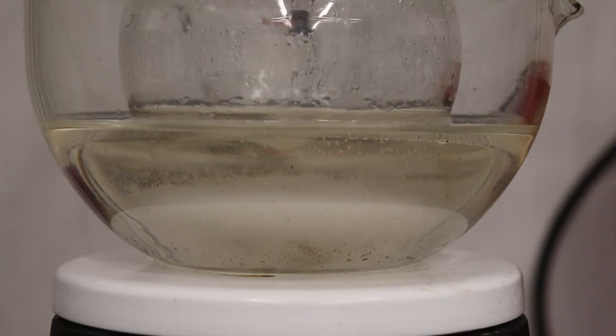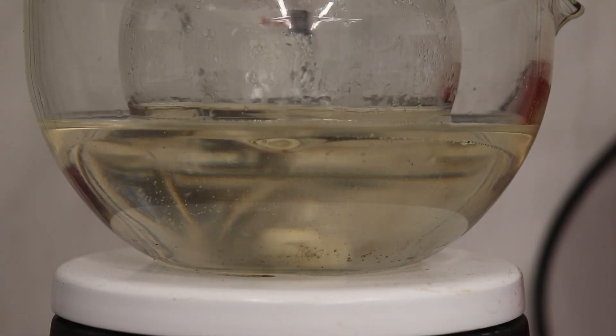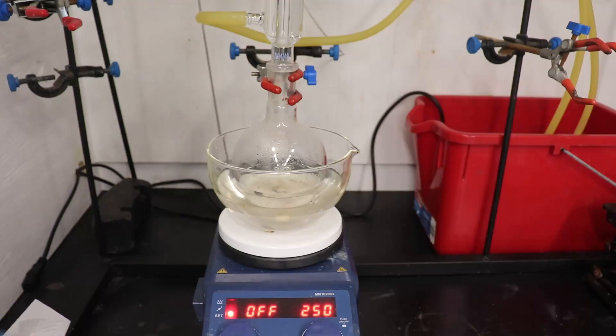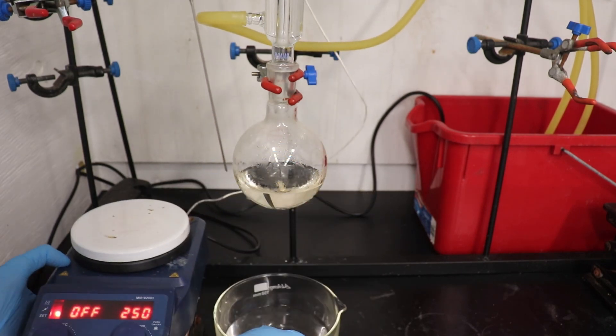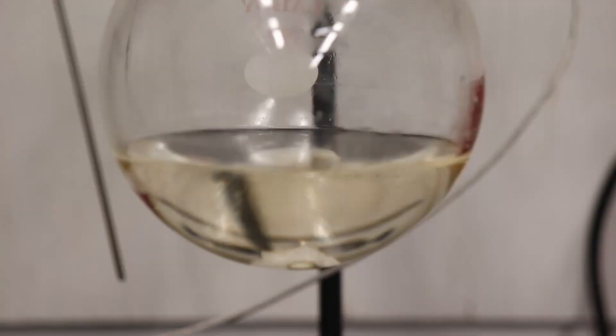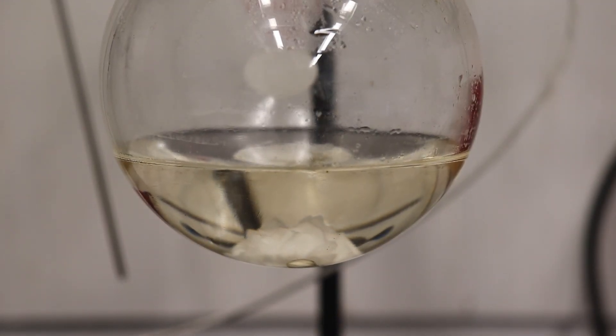The mixture was allowed to heat for an hour, over which time the succinic acid gradually dissolved, leaving a clear solution. The heat was then removed from the flask, and it was allowed to slowly cool to room temperature. The mixture ended up supercooling, and you can see the succinic anhydride crystallizing out in real time.